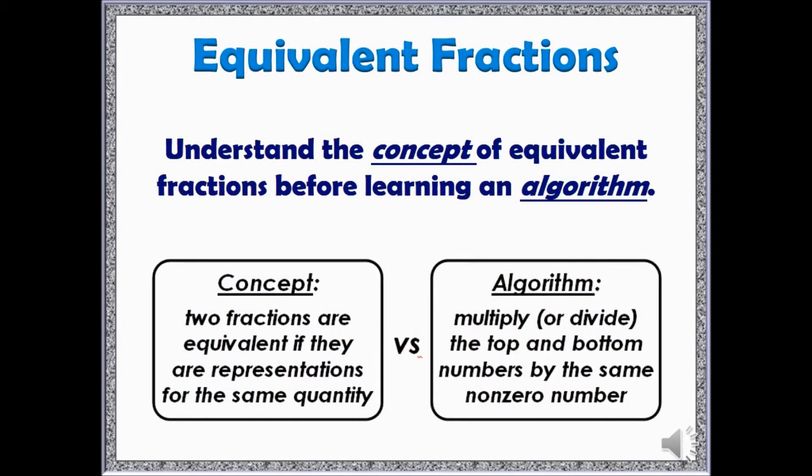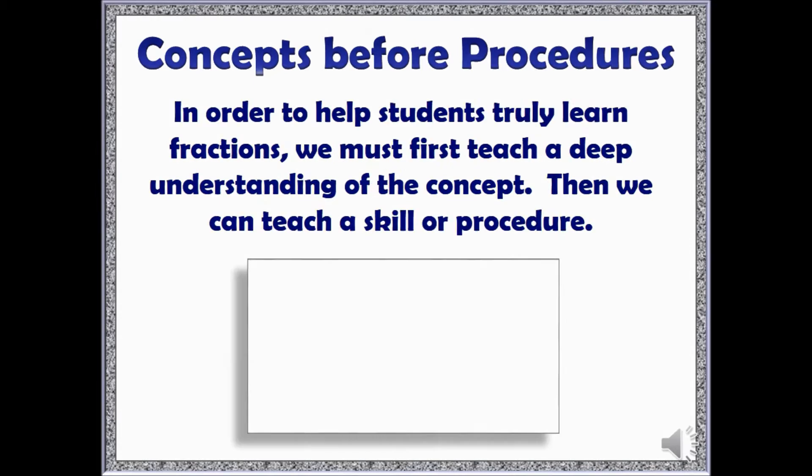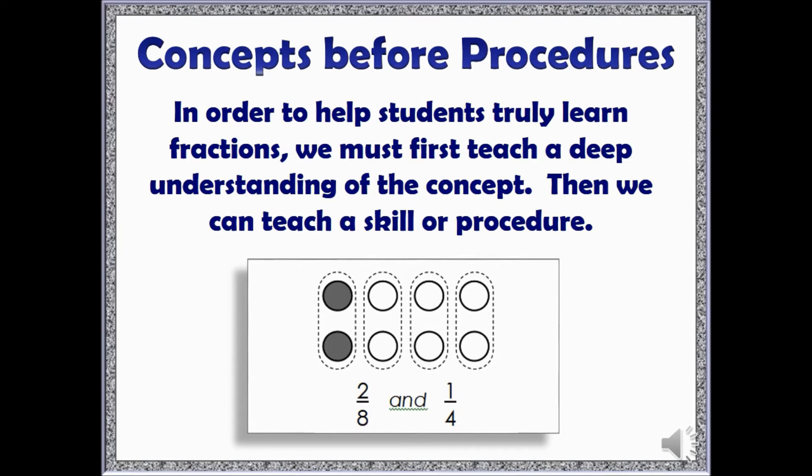When teaching any fractions concept, for example equivalent fractions, be sure to teach the concept before the procedure. Before teaching how to find equivalent fractions, first teach why two fractions are equivalent. For example, start by showing students an image. Ask students what fraction of the image is shaded. Discuss possible names for the shaded portion. Then, tell students that you could call this fraction two-eighths or you could call it one-fourth. Ask students why the set could have either name. Then repeat this with other examples. This activity and other similar activities would be done before actually showing students the procedure for finding equivalent fractions.